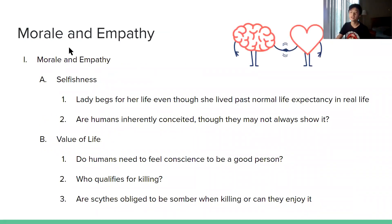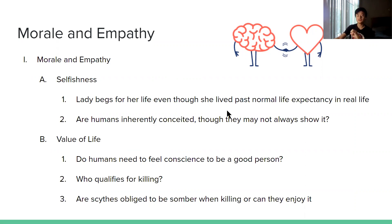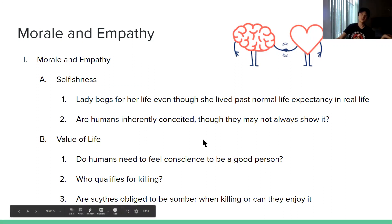The second recurring theme is morality and empathy. In chapters four to six, a lady begs for her life because she does not want to be killed — she was 98, which was way past the normal life expectancy in real life. Are humans inherently conceited even though they might not always show it? We also saw how a bunch of Scythe had killed people on an airplane and they didn't feel any somberness while doing it. Do humans need to feel conscientious to be a good person? And who qualifies for killing? Are Scythe obliged to feel somber when they are killing, or can they actually enjoy it — because it's basically their job?